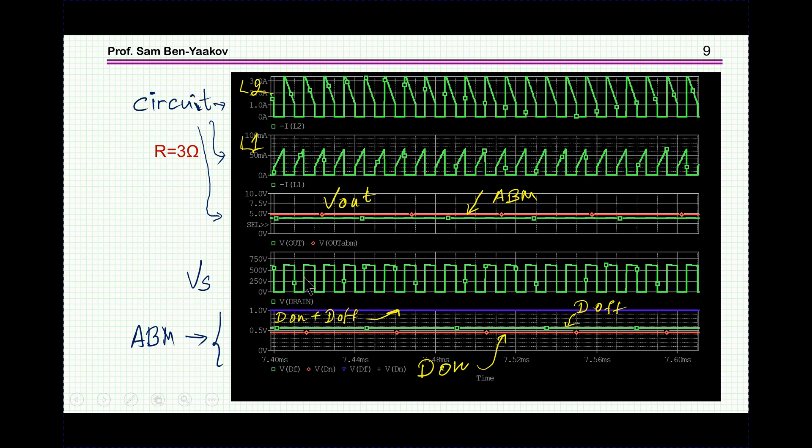Here, we have the voltage on the switch. And here, very interesting, we see for the ABM, for the average model, we see DON. DON is the red. DOFF is the green. And this is the sum of these. Now, in CCM, of course, the sum should be 1 because DOFF is 1 minus DON.